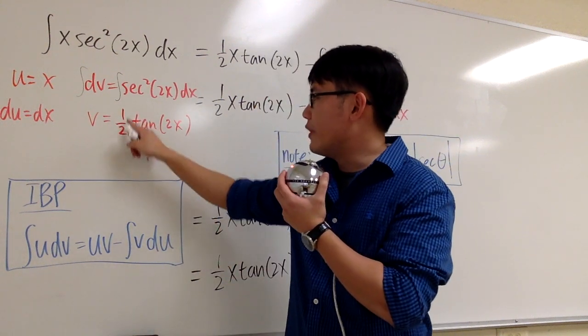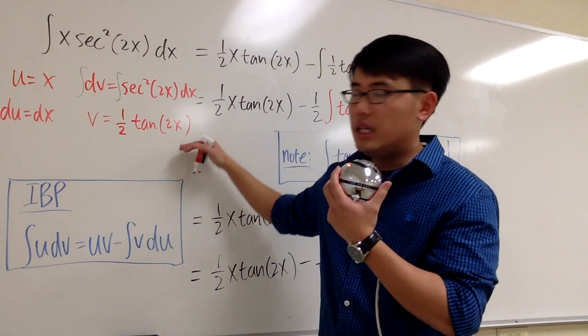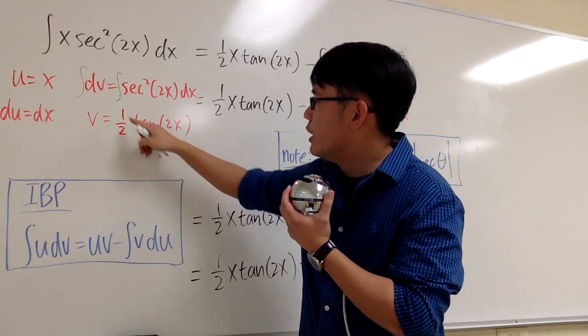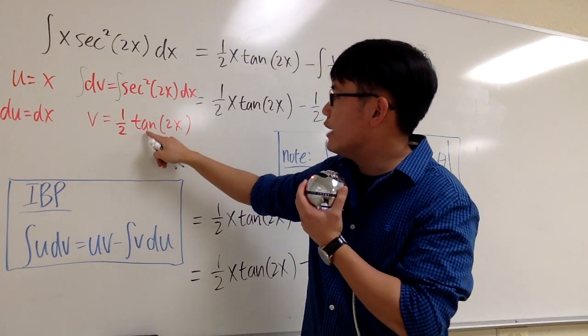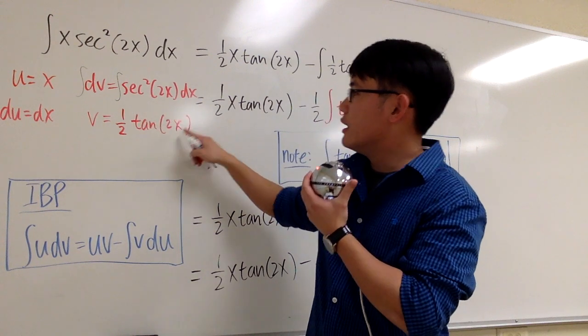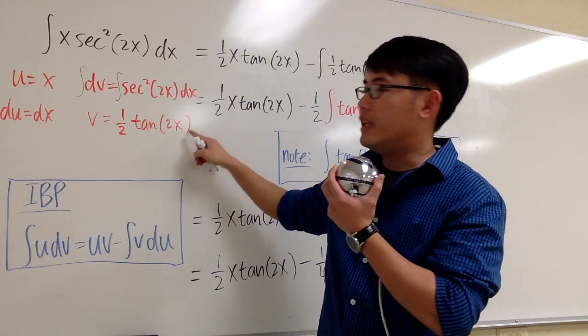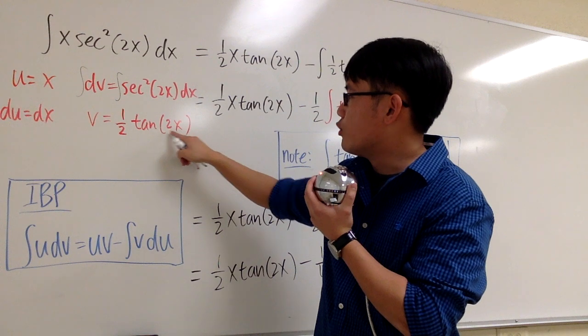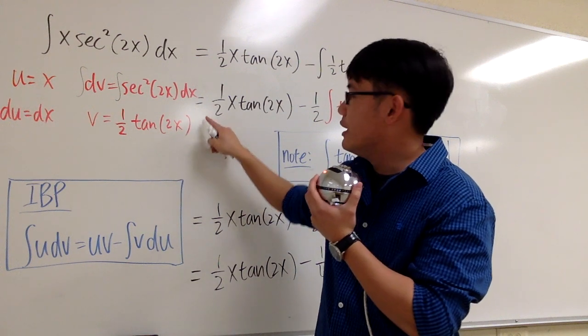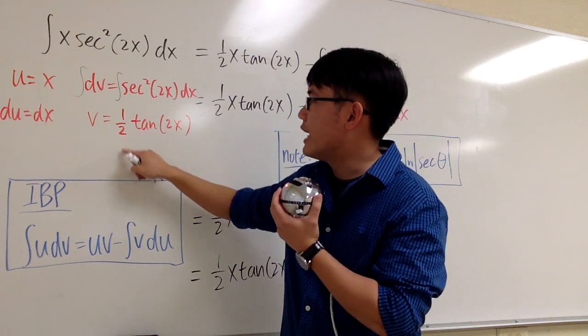So v equals 1 half tangent of 2x. If you differentiate this real quick, 1 half stays the same for now. Tangent is going to give you secant squared. 2x will be the same. And then you have to multiply by the derivative of 2x, because of the chain rule. And that 2 will cancel with this 1 half.